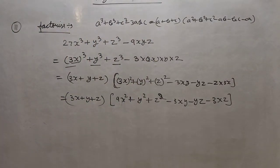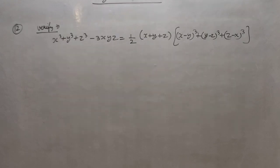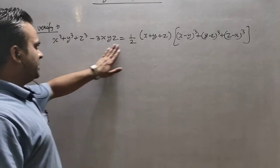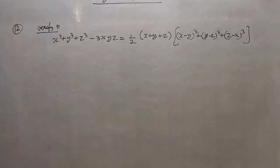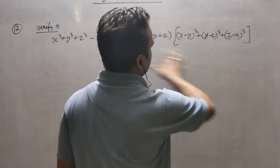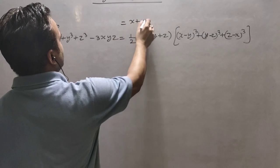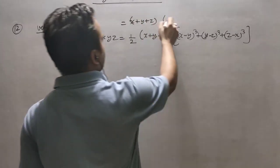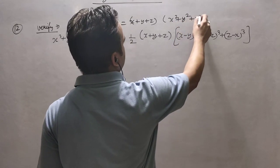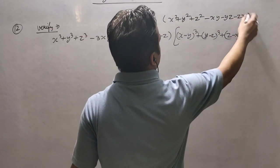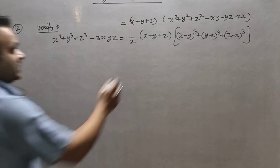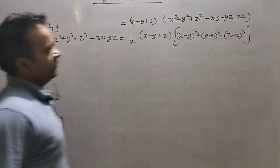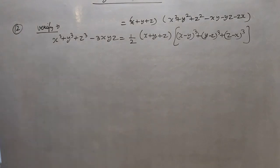So finally we can write it as (3x + y + z)(9x² + y² + z² - 3xy - yz - 3xz). This is the first factor and the second factor. Now question number 12. In this case you can see the left-hand side is related to an identity and we know the result of this identity, but the right-hand side is not in that form. We have to check whether this right-hand side can give us the form (x + y + z)(x² + y² + z² - xy - yz - zx).